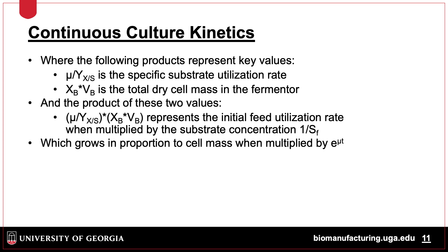This is multiplied by the total biomass — X sub B, dry biomass, times V sub B, or volume — and divided by the substrate concentration. The feed rate grows proportionally to the cell mass, which can be calculated by multiplying the feed rate by E to the mu T.